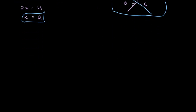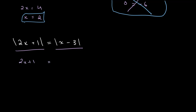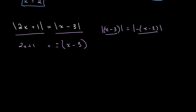Let's look at another example to solidify this concept. Let's say that we have the absolute value of 2x plus 1 is equal to the absolute value of x minus 3. I recommend that you pause and try to solve it yourself before continuing. We can say that 2x plus 1 is equal to either positive or negative x minus 3, because the absolute value of x minus 3 is the same as the absolute value of negative x minus 3 — they have the same magnitude. So we have two cases: 2x plus 1 equals x minus 3, or 2x plus 1 equals negative x minus 3.